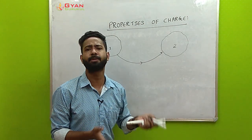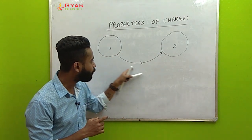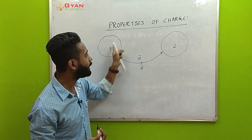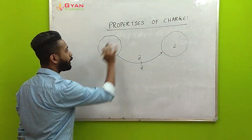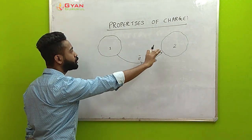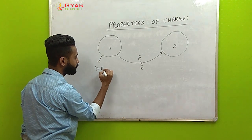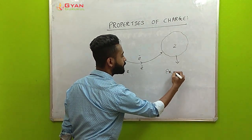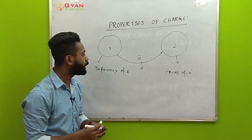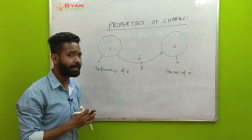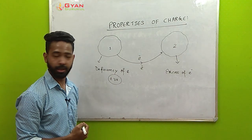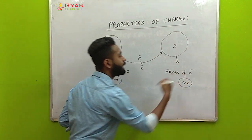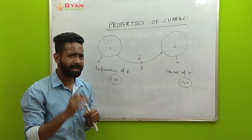When electrons get transferred from body one to body two, body one will have a deficiency of electrons and will acquire an overall positive charge, while body two will have an excess of electrons and will acquire an overall negative charge. There is no transfer of protons unless specifically mentioned.